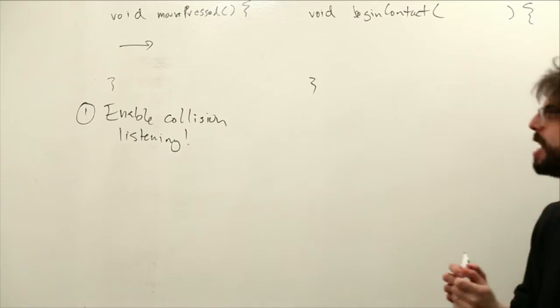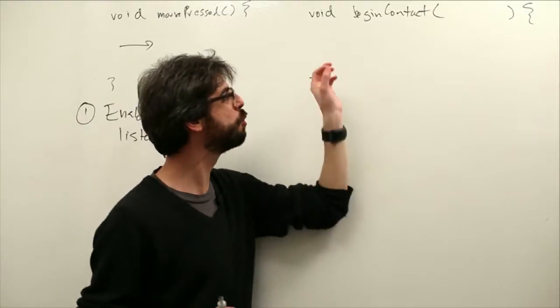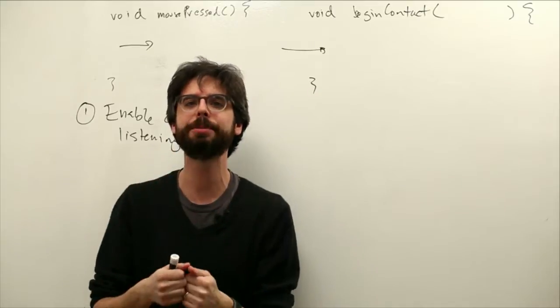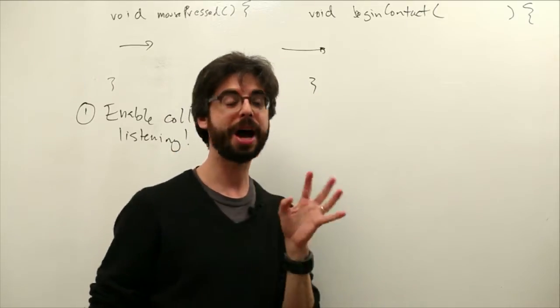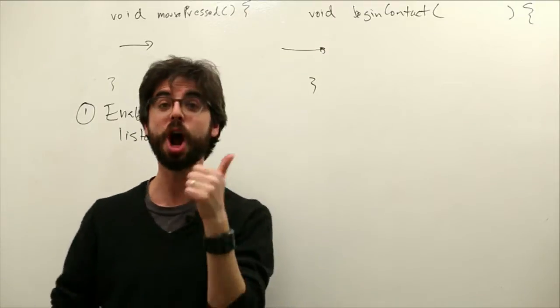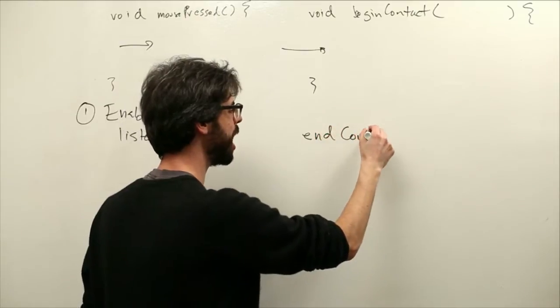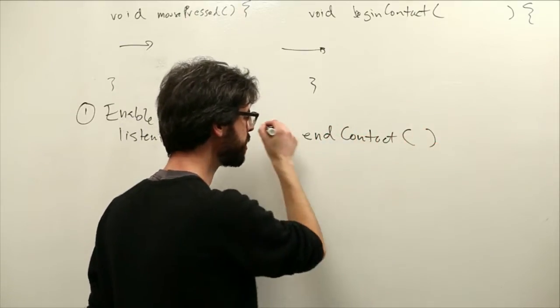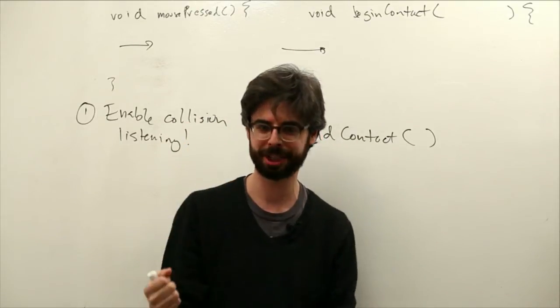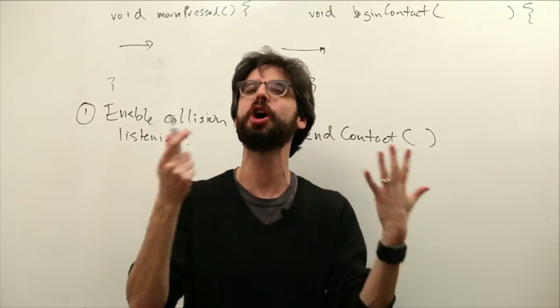But as soon as you enable listen for collisions, then this function is going to become activated. If you write this method, the code here will be executed at the moment two objects come in contact with each other. Now, I should point out that this is the only one we're going to work with in this particular example, but there are other types of collision events. There's something called endContact. EndContact is the moment when two objects that have hit each other stop hitting each other.